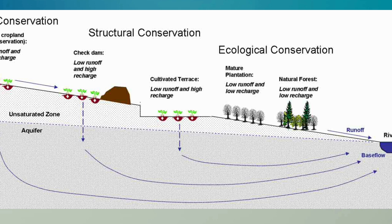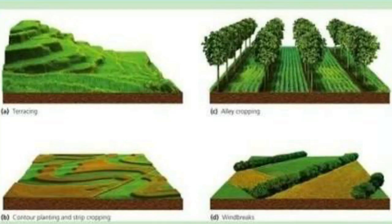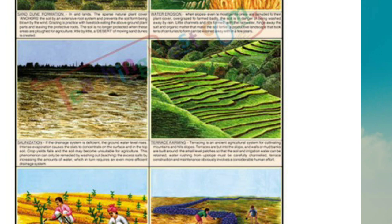Soil conservation is very important. Contour farming is done in mountainous regions to prevent soil erosion. To check gully erosion, field bunds can be made. Planting trees, collecting running water on mountain slopes, and developing grazing lands in rural areas also help prevent soil erosion.